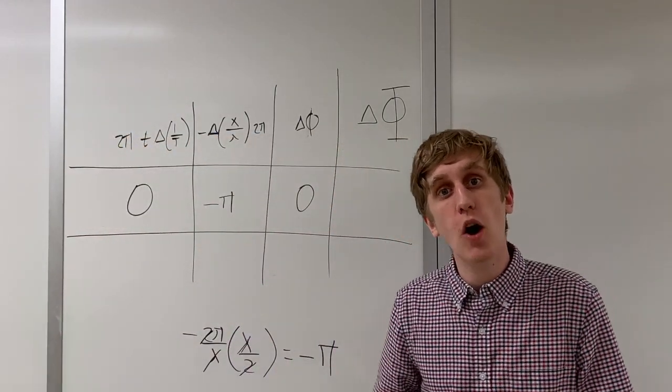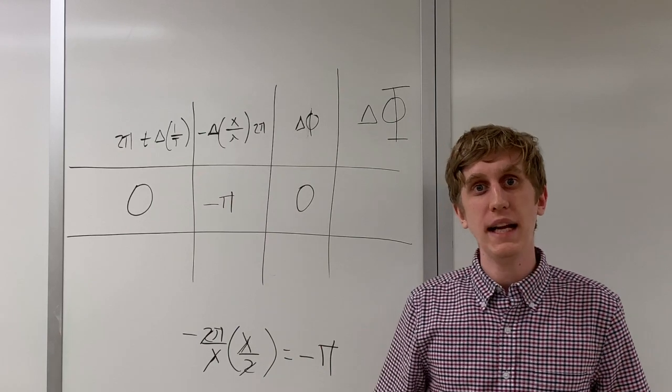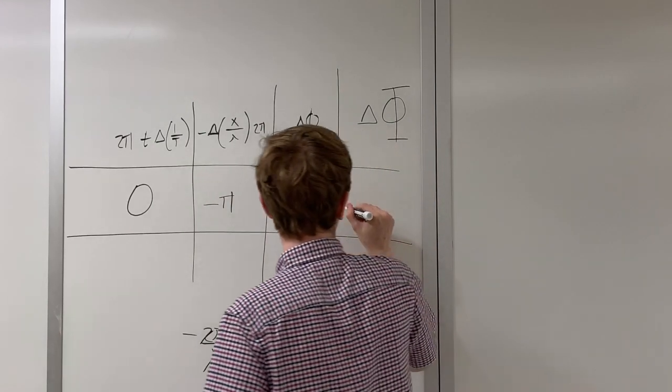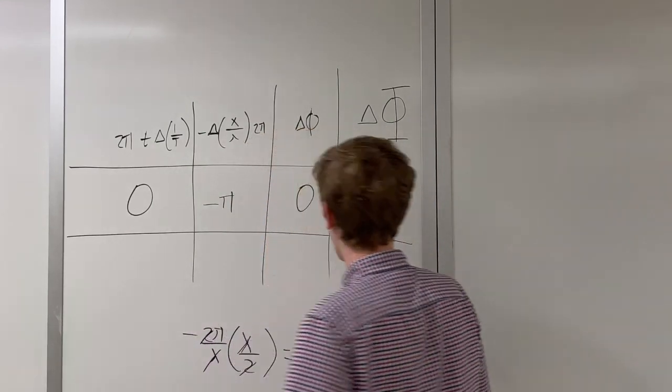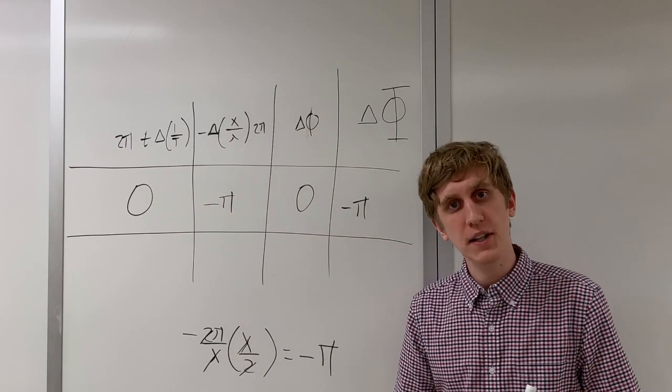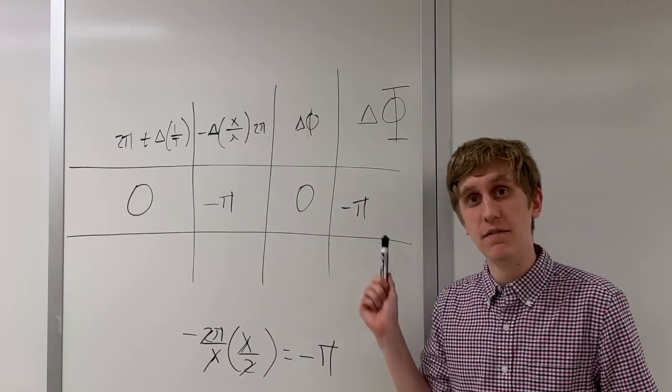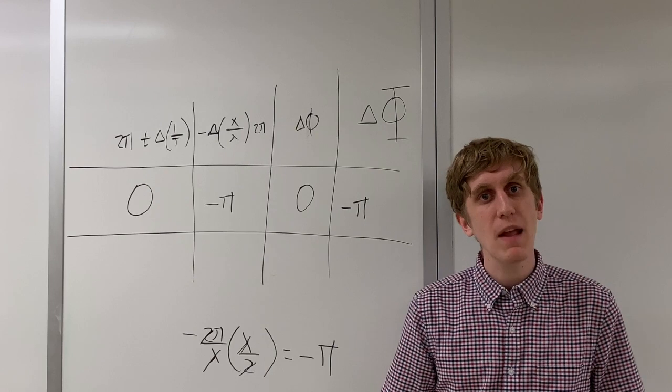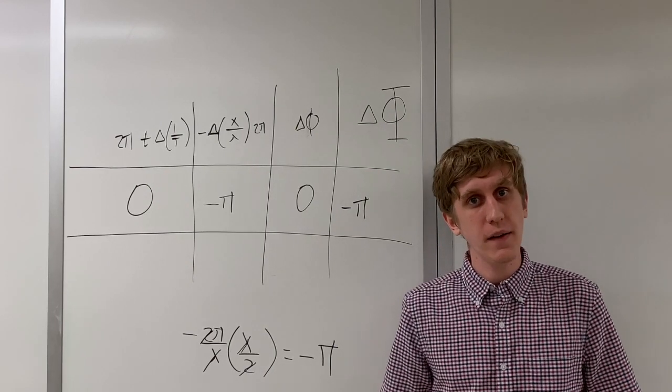To get our difference in total phase, we just add up all the individual differences. What kind of interference do we get when we have a phase difference of negative pi? The answer is destructive interference.